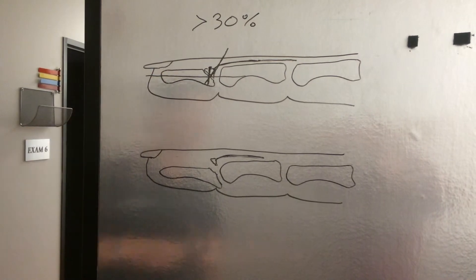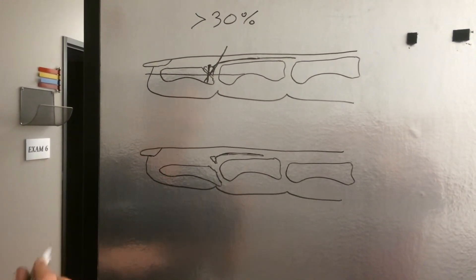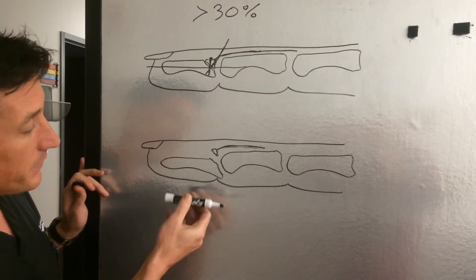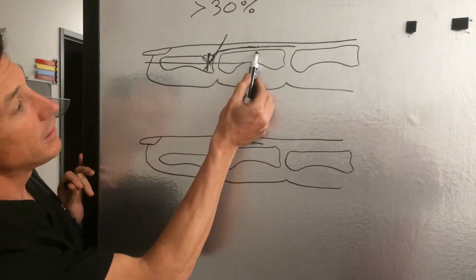Another indication for surgery is if the distal phalanx subluxates palmarly. This is a representation of that. If you draw a line on the back or the dorsum of the middle phalanx, it should line up with the base of the distal phalanx.